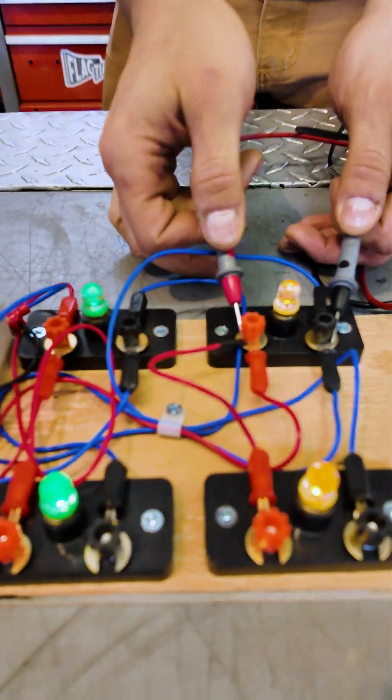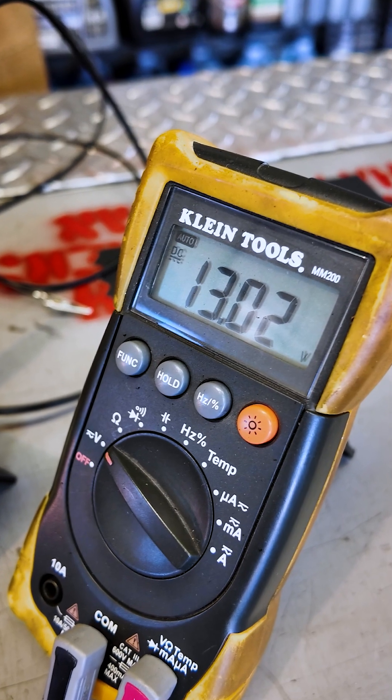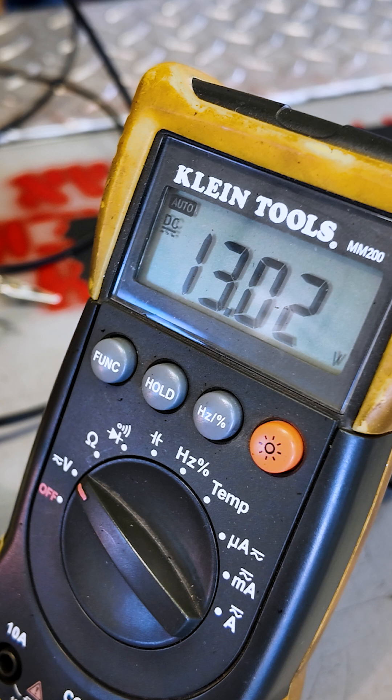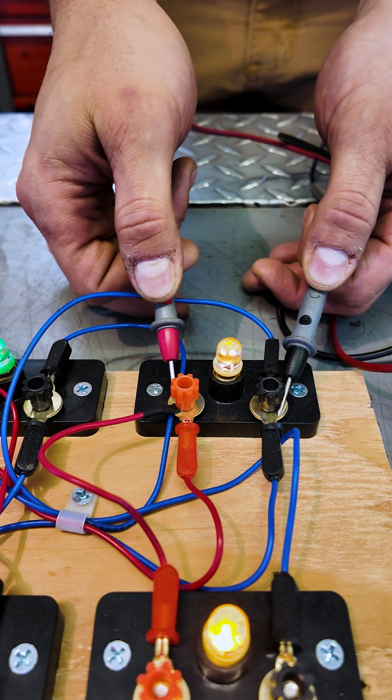Okay, if we throw our meter onto the old car, we see 13.02 volts. That's exactly what we'd expect to see out of the charging system of a running vehicle out of say the 70s or 80s.